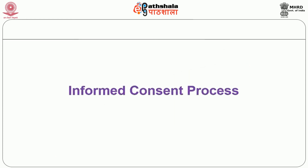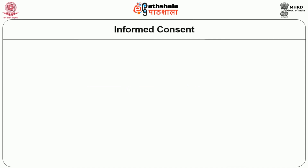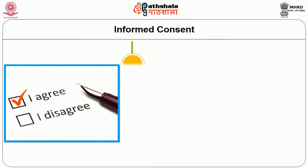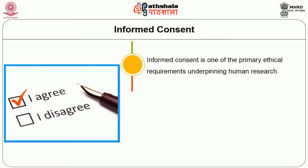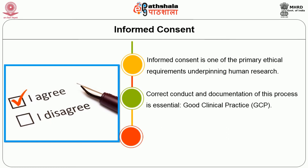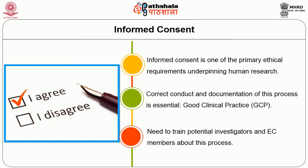Now let us move on to the next pillar — the informed consent process. Why informed consent? Informed consent is one of the primary ethical requirements underpinning human research. The principle of autonomy demands that individuals have the right to decide for themselves whether they want to participate in your research or not. The correct conduct and documentation of this process is given in the GCP guideline — the Good Clinical Practice guideline — which is for research purposes. Investigators and EC members need to be trained in and aware of what this whole process involves.